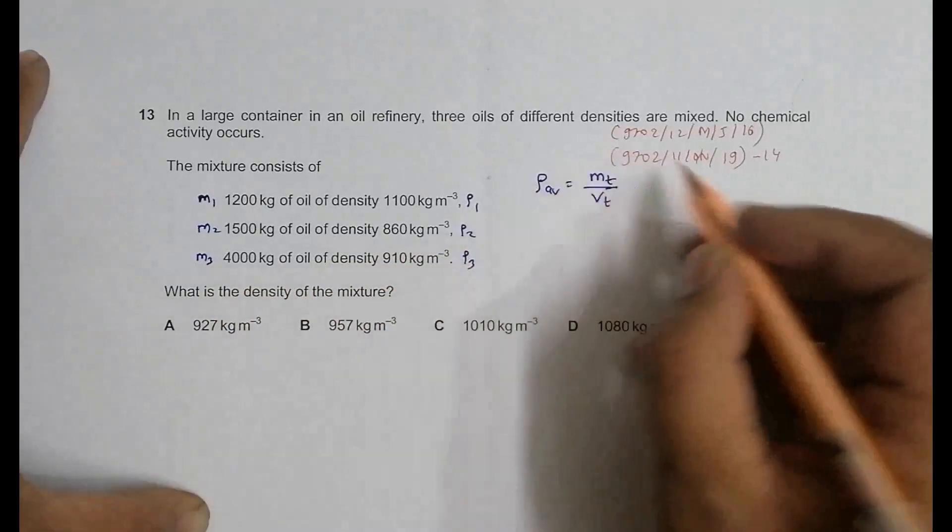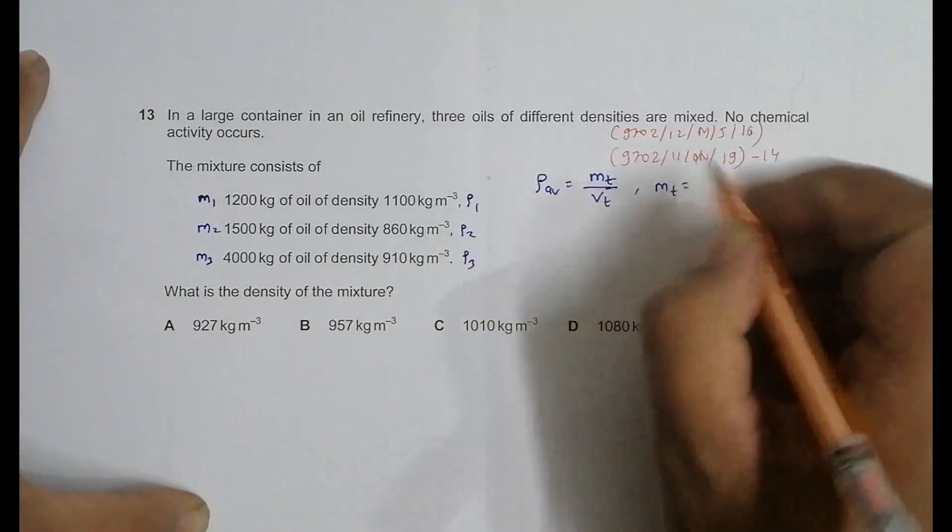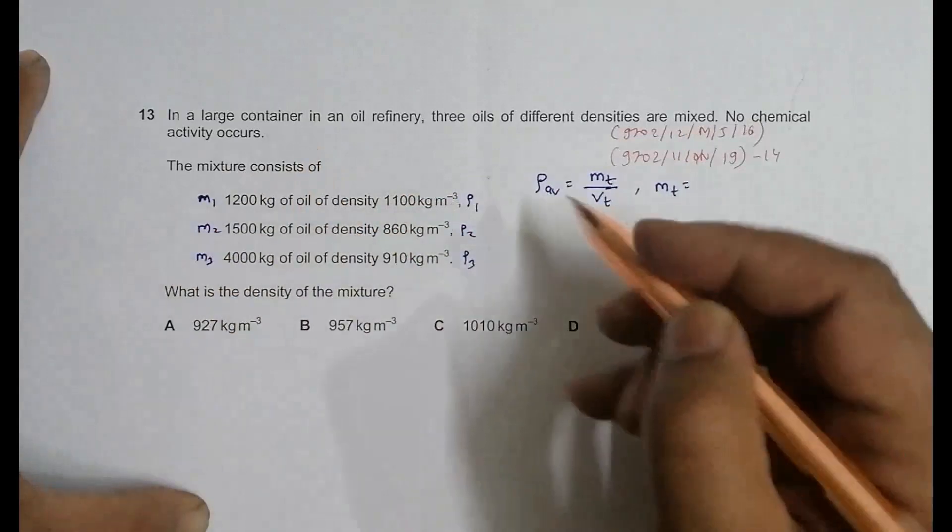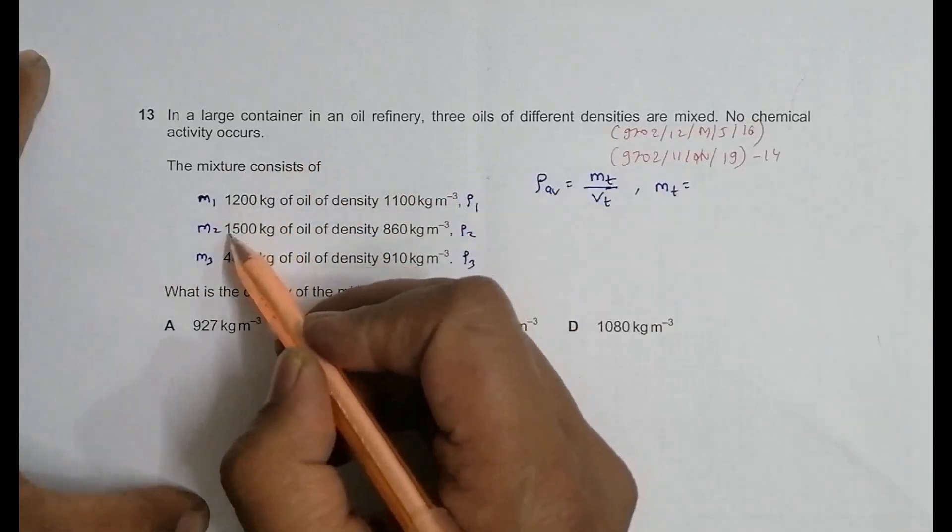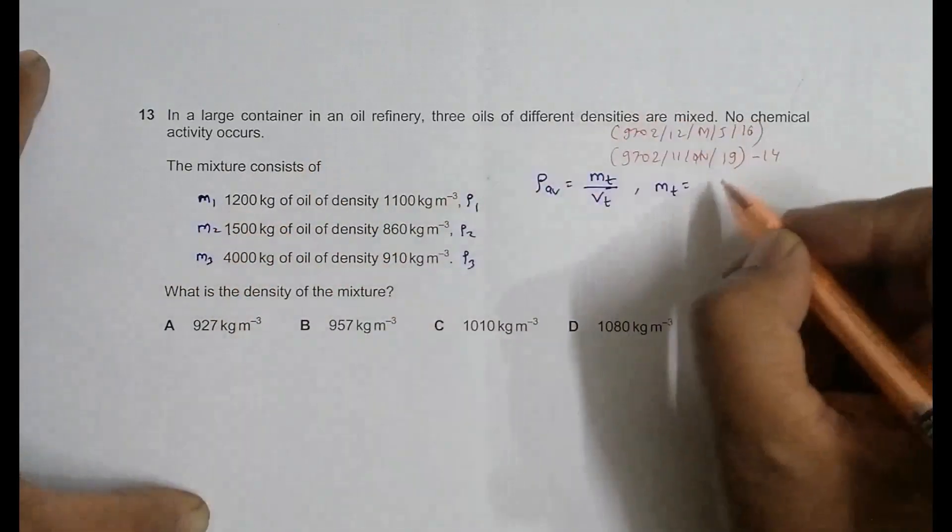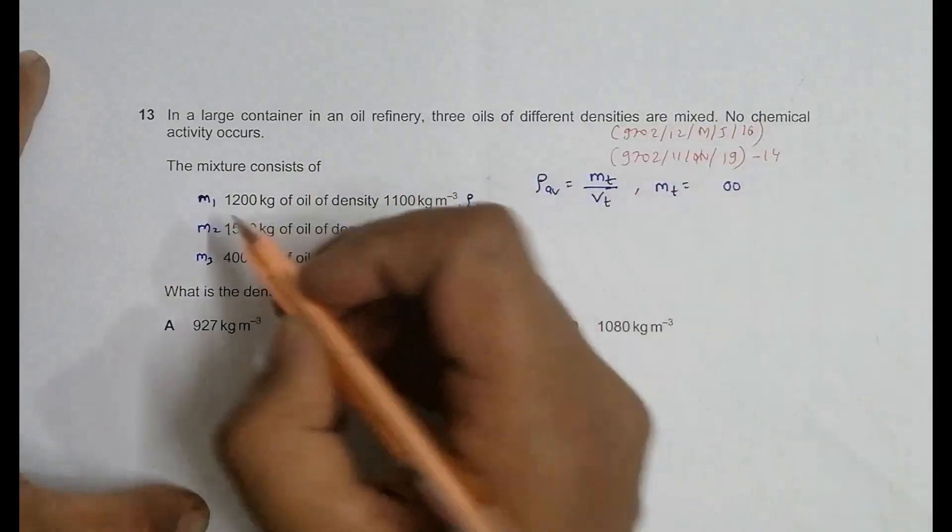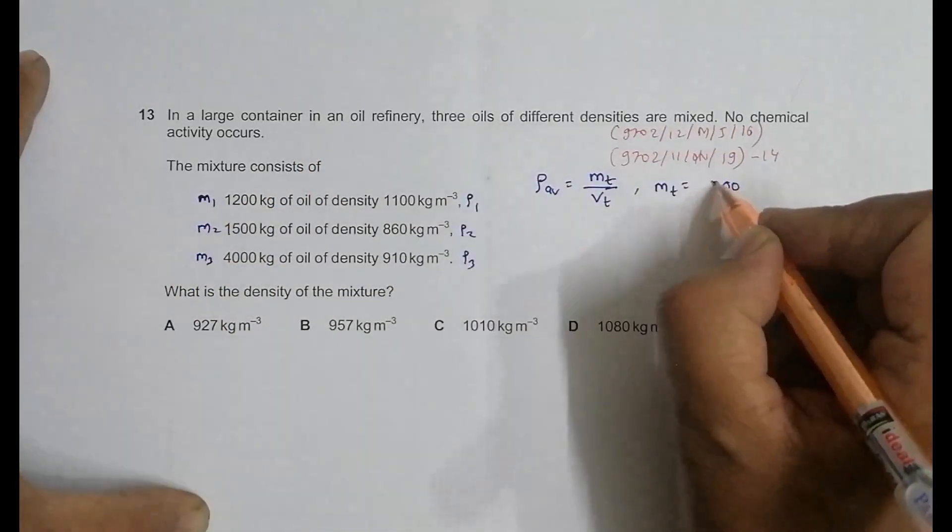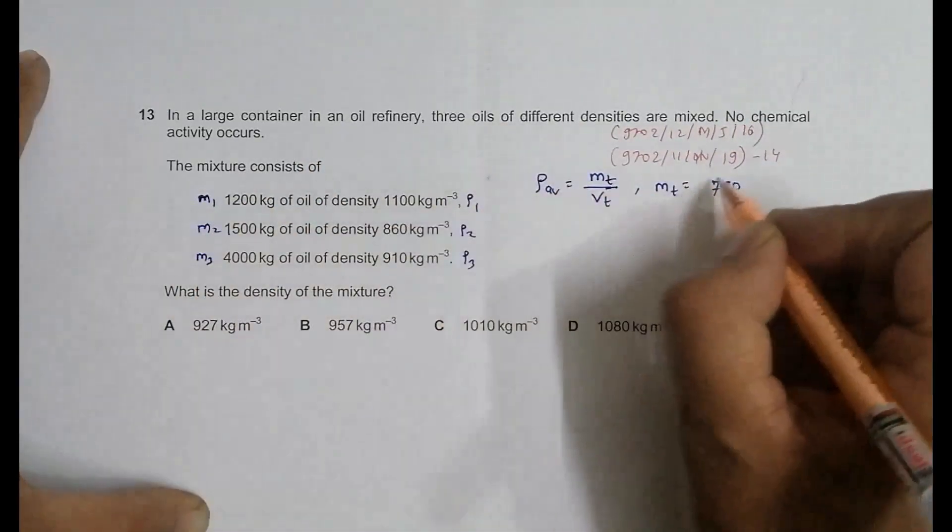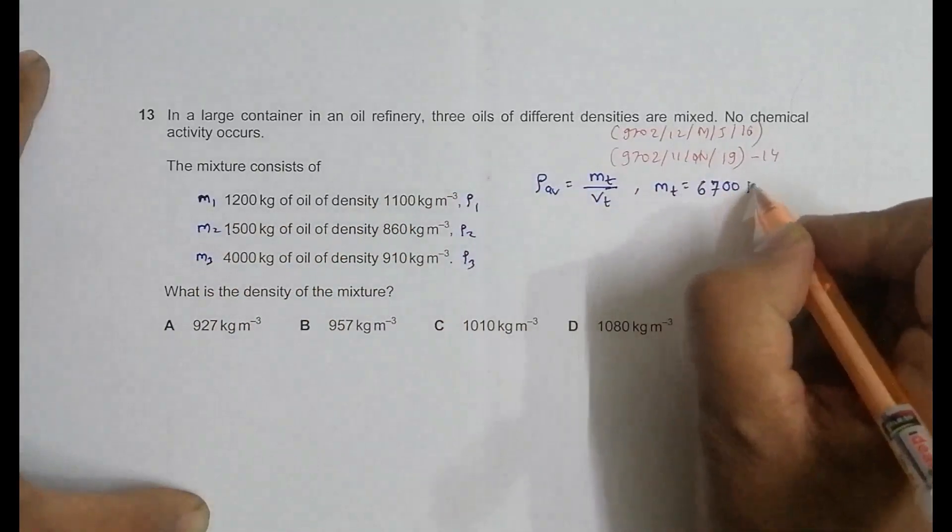The mass total is equal to the mass of all of these things, so it's 1200 plus 1500 plus 4000. So it is 6700 kg - this is mass total.